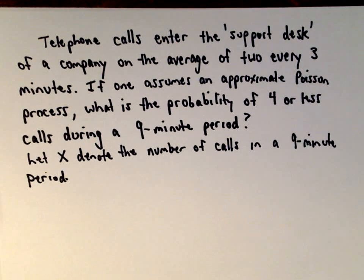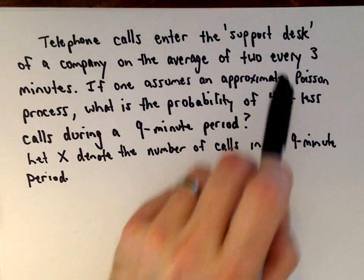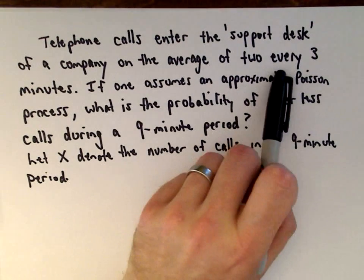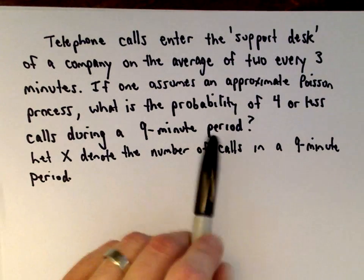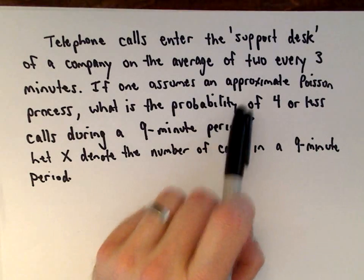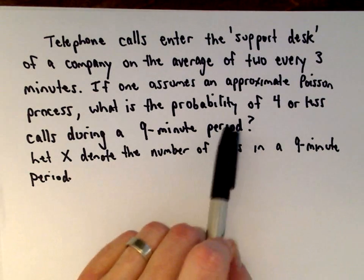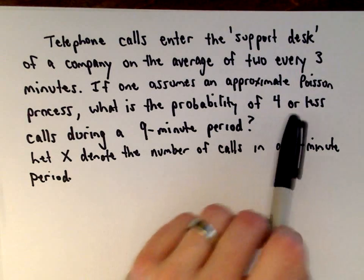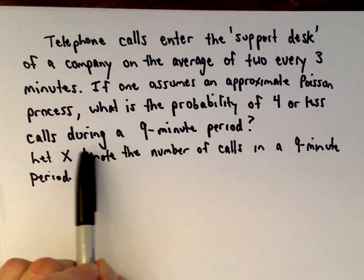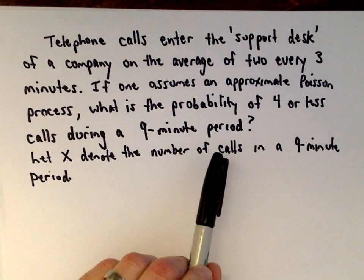Telephone calls enter the support desk of some company at an average of two phone calls every three minutes. If one assumes an approximate Poisson process, what's the probability of four or fewer calls during a nine-minute period?